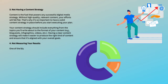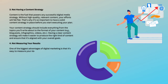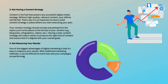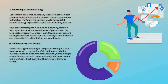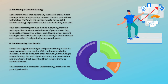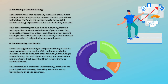4. Not Measuring Your Results. One of the biggest advantages of digital marketing is that it's easy to measure your results. With traditional marketing methods, it can be difficult to track how well your campaigns are performing. But with digital marketing, you can use data and analytics to track everything from website traffic to conversion rates. This information is critical for understanding whether or not your digital media strategy is working. Be sure to set up tracking early on so you can measure your progress and make adjustments as needed.